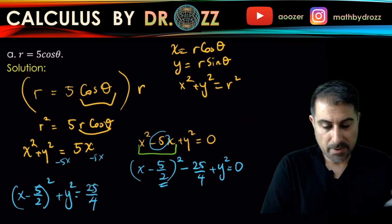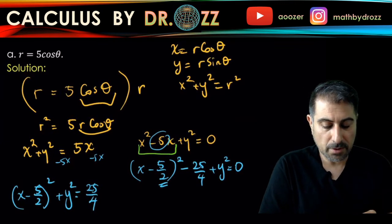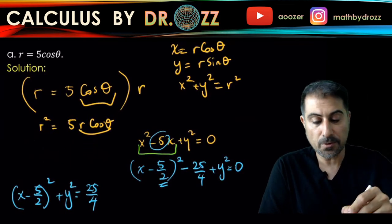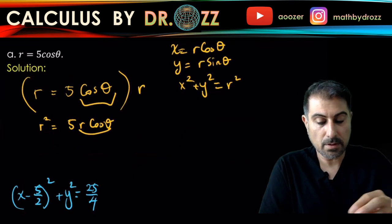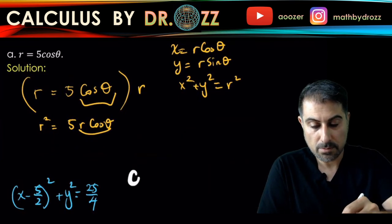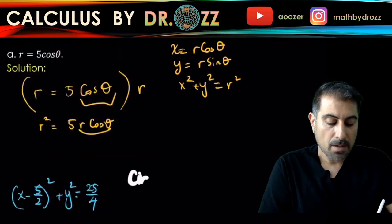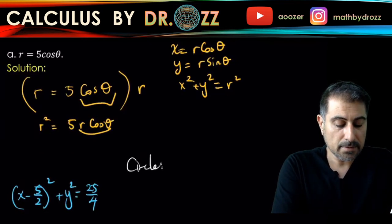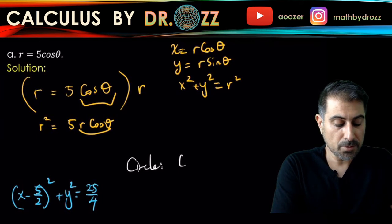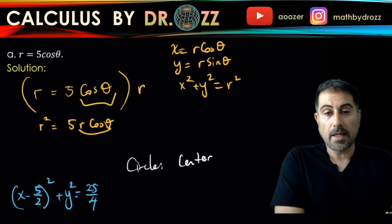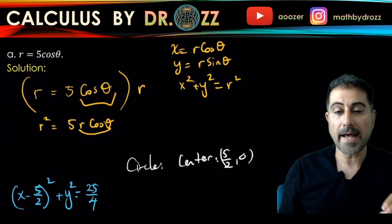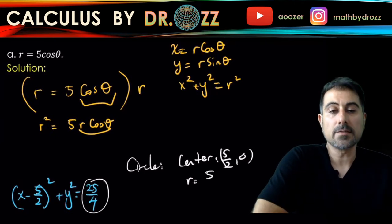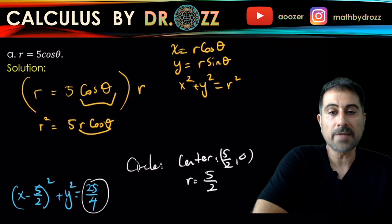So, since we are done with conversion, we can talk about what kind of conic section this one is. Well, first of all, this is circle, right? We have a circle whose center is five over two and zero. And the radius is the radical of this number, which is five over two. So you can go ahead and draw a circle centered at five halves and zero, and with the radius of five halves.